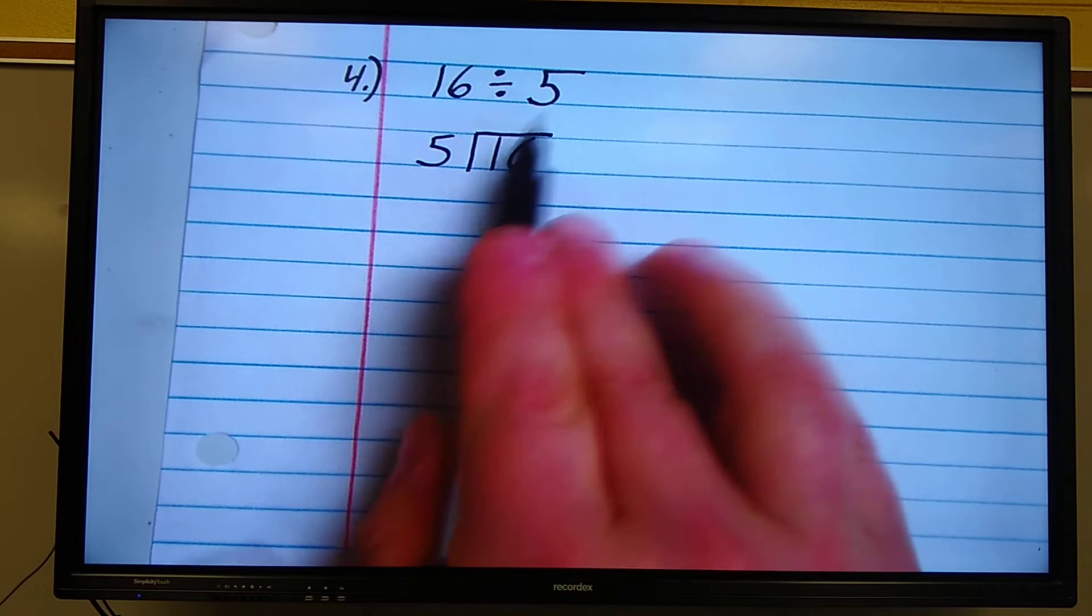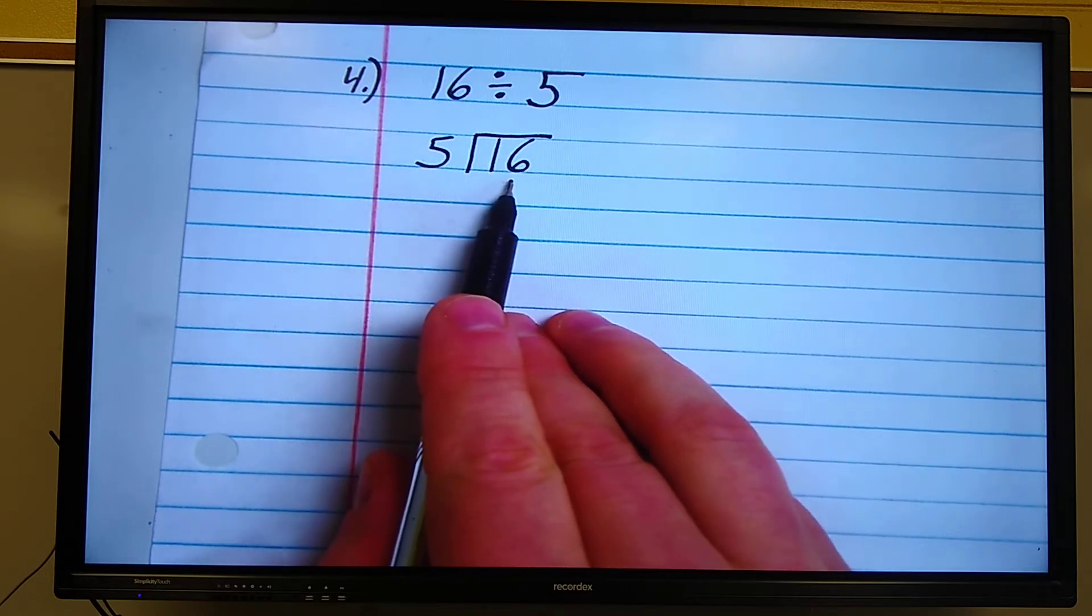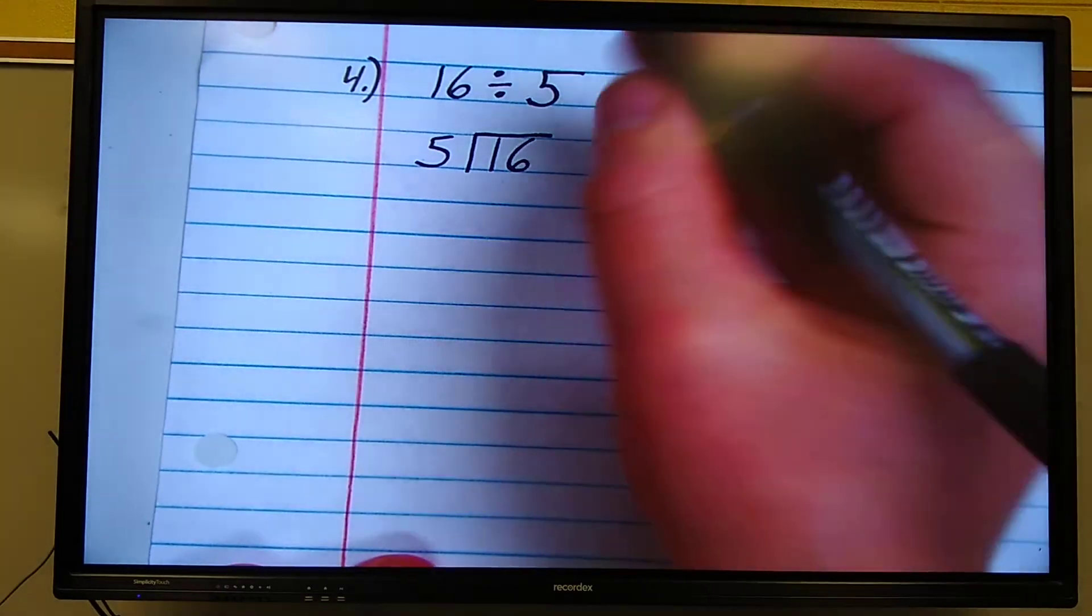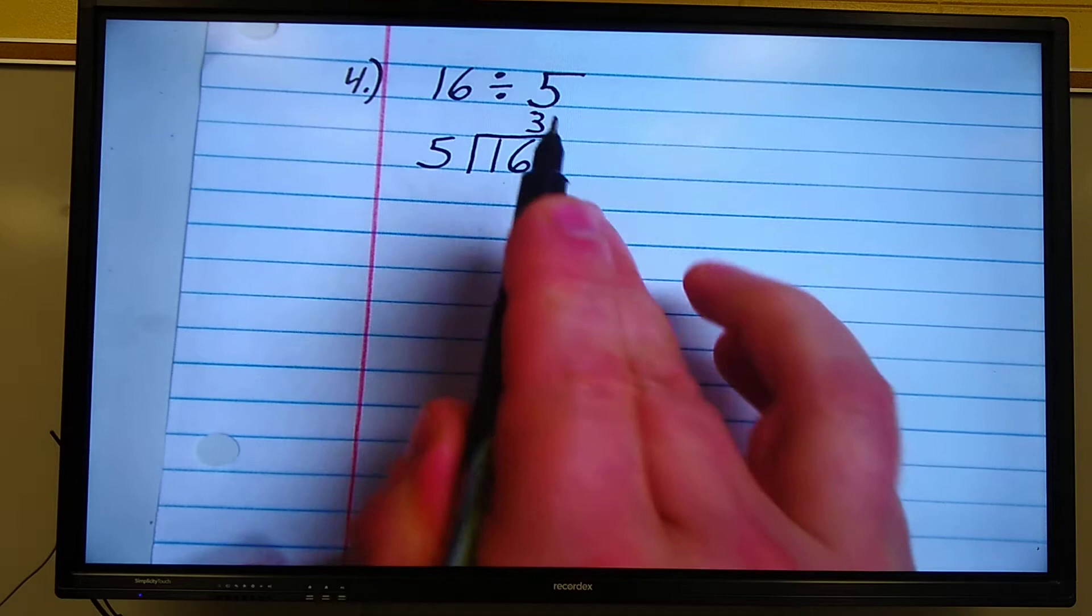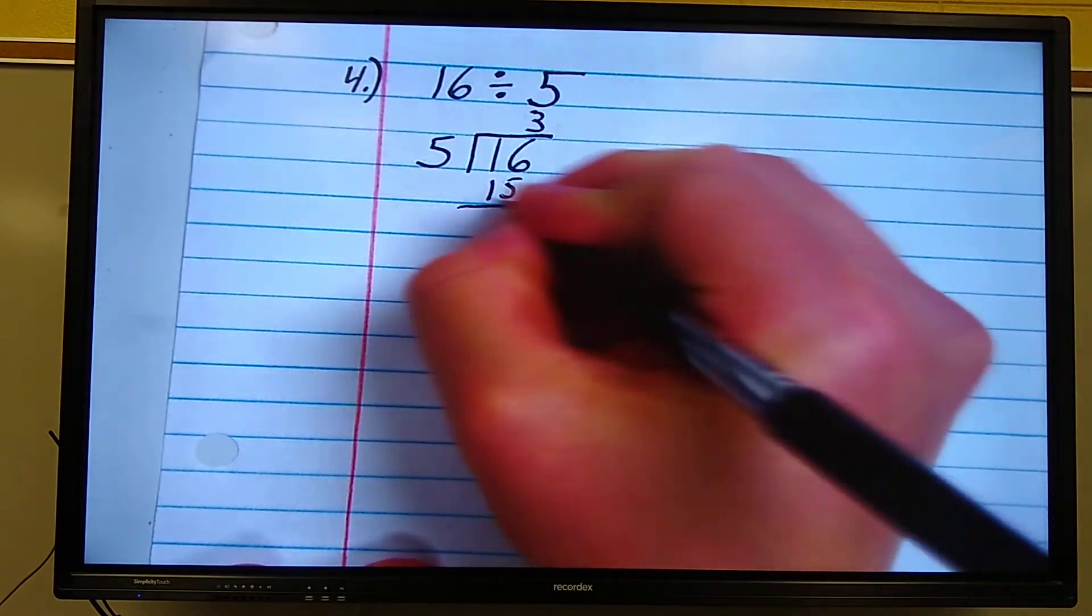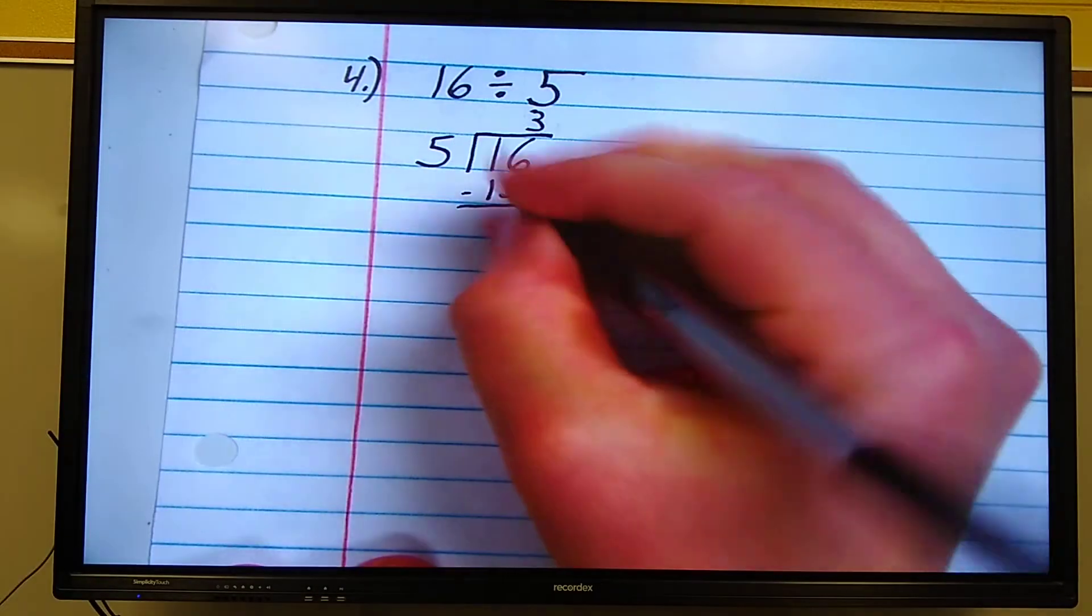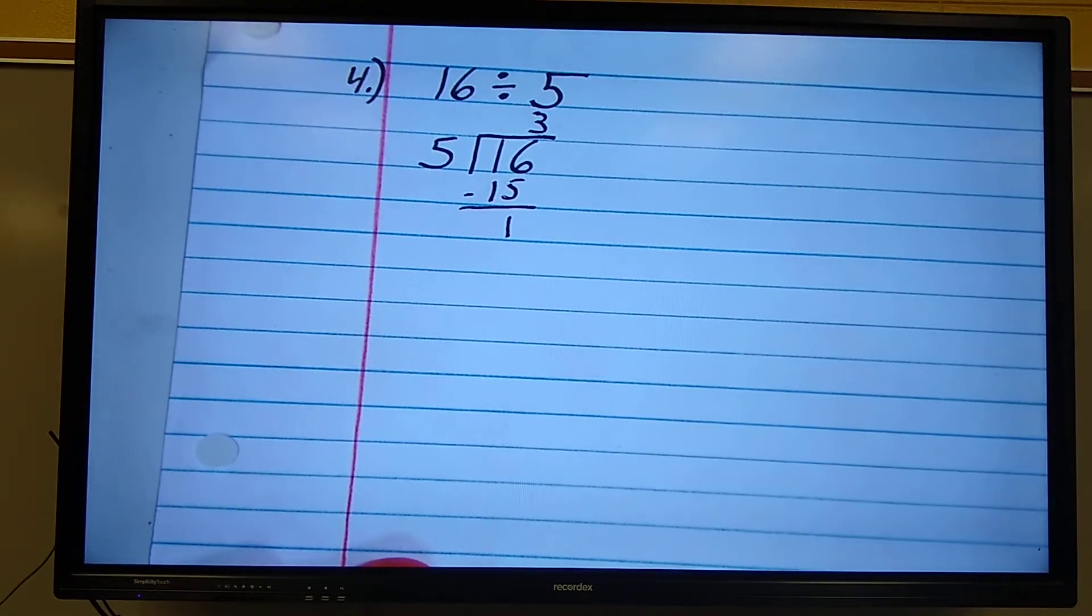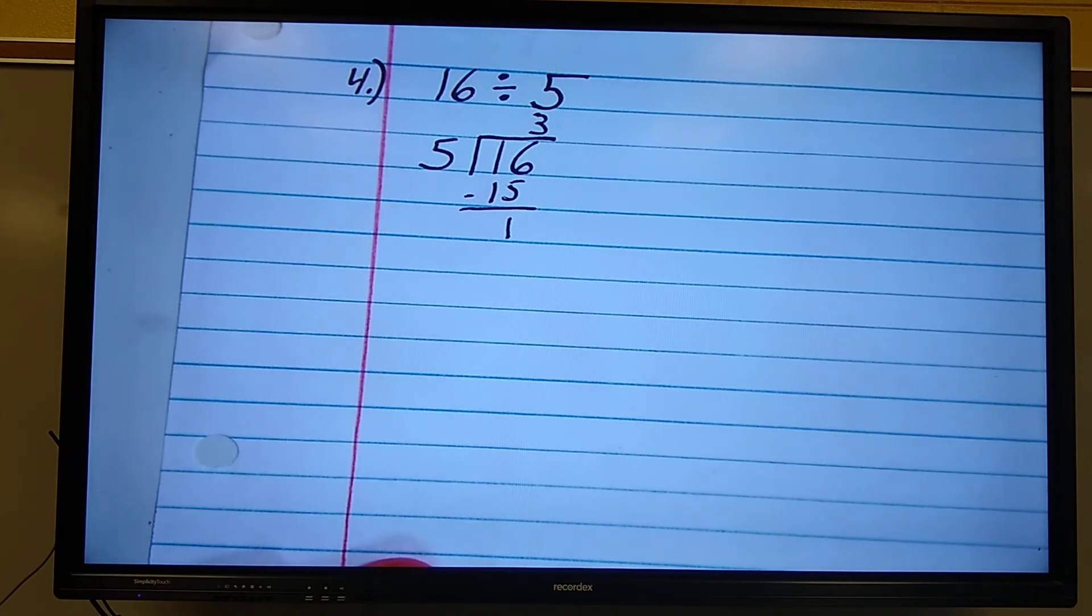16 divided by 5. 16 is my dividend, 5 is my divisor. Can 5 divide into 1? No. Can 5 divide into 16? Yes. How many times without going over? You should have 3 times. Now the 3 is going to go above the 6 because you're dividing into 16. 3 times 5 is 15. That was multiply. Now we subtract. 16 minus 15 is 1. My last step is to bring down. Now listen, I don't have anything to bring down. That means I am finished.